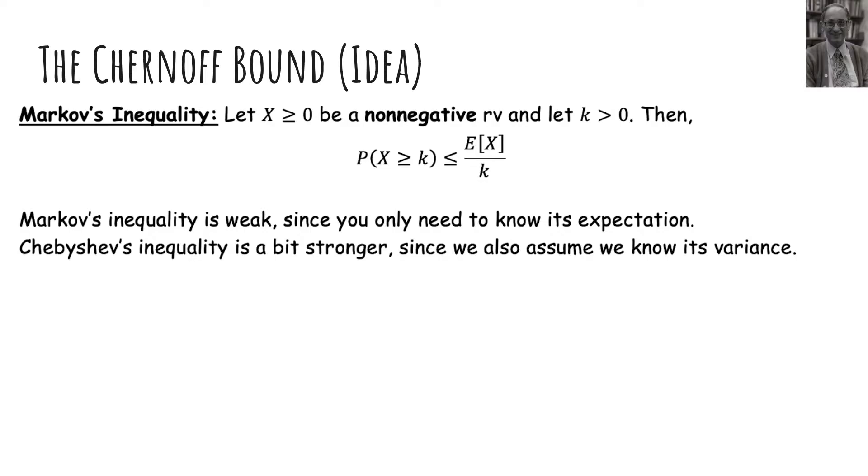Chebyshev's inequality was a little bit better because we also need its variance. So we can use our bound to say it depends on the variance. If the variance is small, I can tell you that it must be within an even smaller range. So now we're going to try to derive something even stronger.